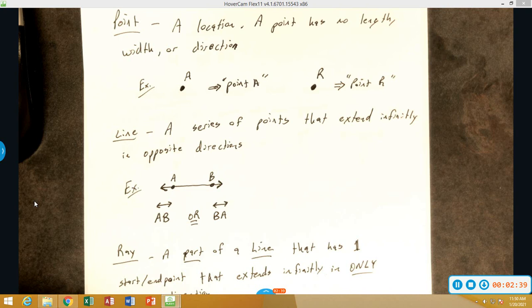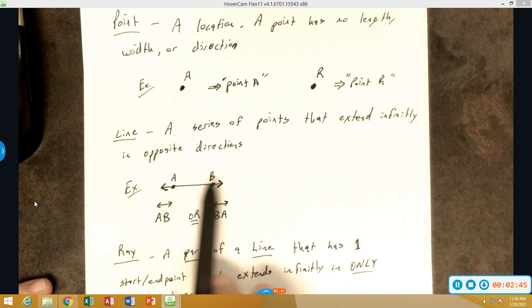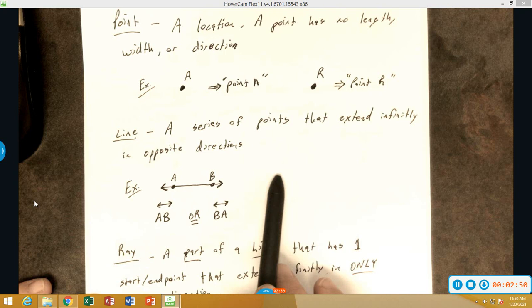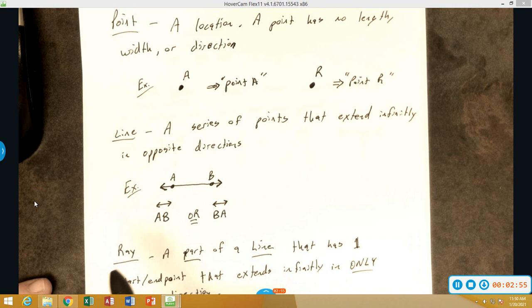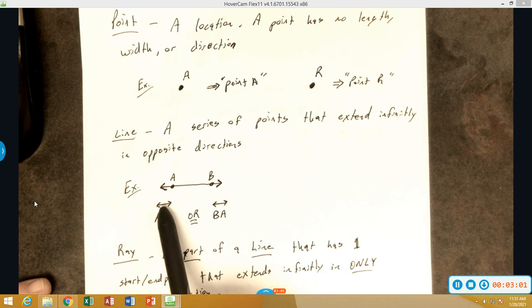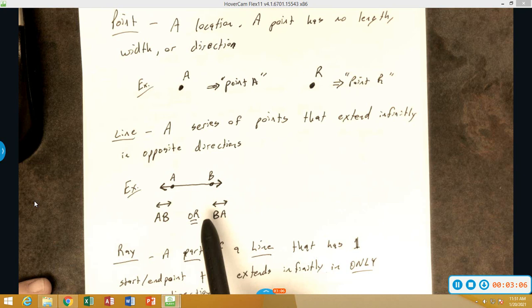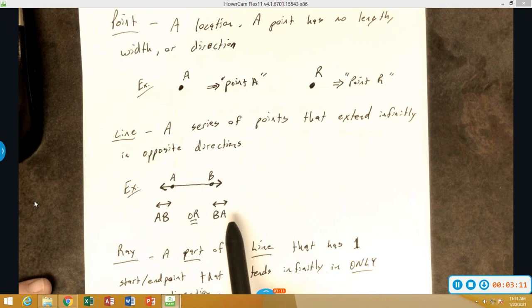This line right here, notice that there are arrows on both sides. That means we are going from A through B infinitely, and also going in an opposite direction from B through A infinitely as well. We note this as line AB. This also goes by another name, we can also call this line BA.